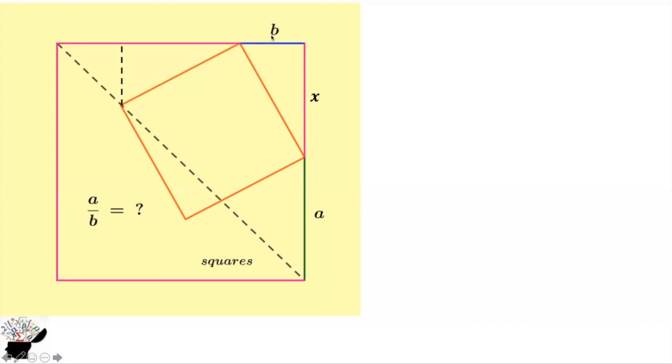So if this side is B, this side is also B. And this length will be X because they are congruent. It means that they are the same. So here will be X.